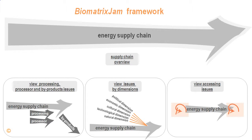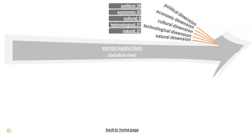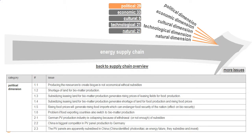We have come back to the homepage of the presentation. Let us now have a look at the issues categorized by different dimensions: political, economic, cultural, technological, and natural. Here we again have the overarching supply chain, this time with a number of issues related to each dimension. We can zoom into each of the dimensions or zoom into the energy supply chain as a whole. If we zoom into the political dimension, we can see the list of the issues in that dimension.